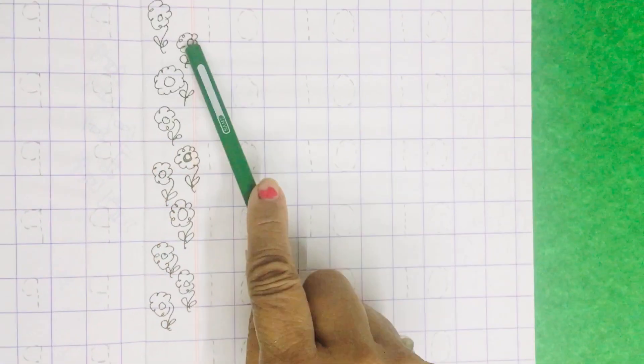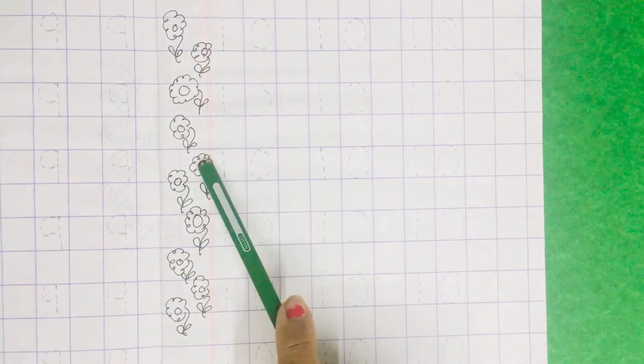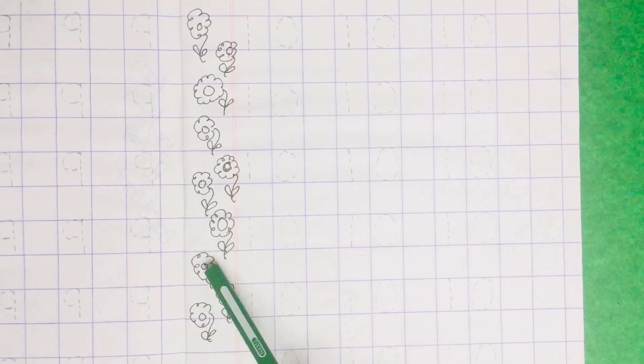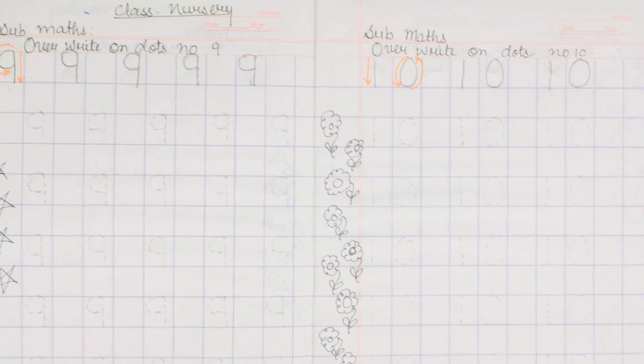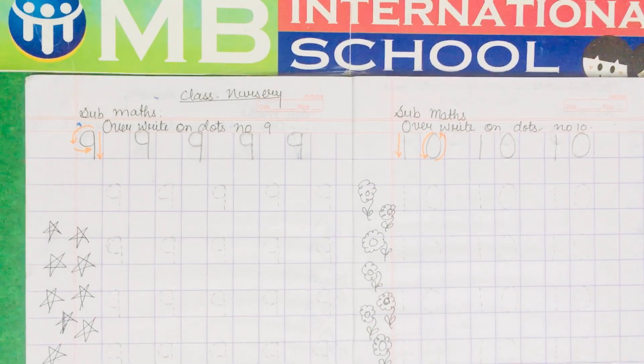Repeat with me again: 1, 2, 3, 4, 5, 6, 7, 8, 9, 10. This is number 10. There are 10 flowers. You have to do this work in your copy also.